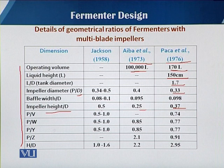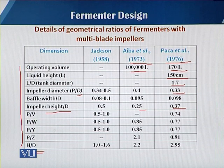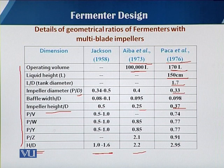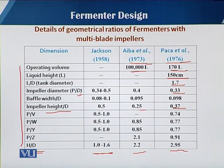The most important geometrical ratio is H/D, where H is the total height of the fermenter and D is the diameter. For Jackson, the ratio should be 1 to 1.6; for Iba et al it should be 2.2; and for Pekka et al it goes up to 2.95.